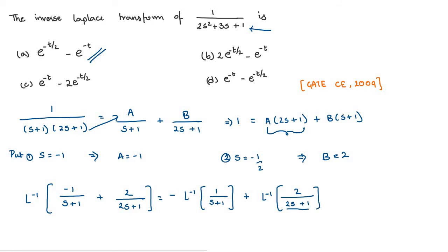Taking 2 common in the denominator, we get 2·(s + 1/2). Canceling 2 in numerator and denominator, we get the inverse Laplace transform as −e^(−t) + e^(−t/2). So the answer is −e^(−t) + e^(−t/2).